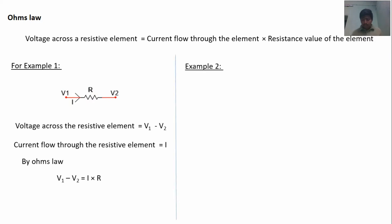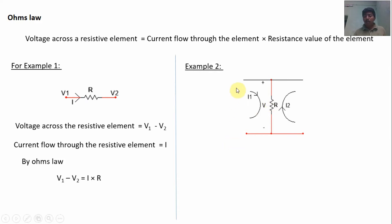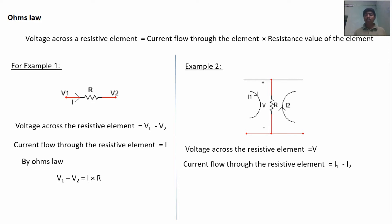Another example: a circuit is given here where current flows through the resistive element. I1 current flows from plus to minus but I2 current flows from bottom to top. Net current flow through the resistive element is I1 minus I2. Voltage across the resistive element is V, and current flow through the resistive element is I1 minus I2.